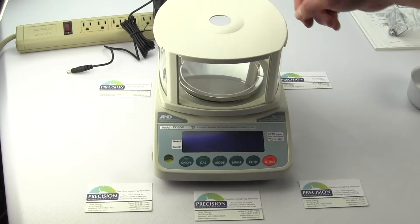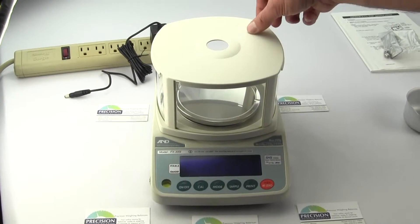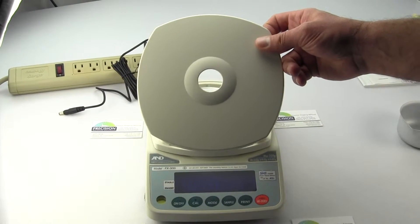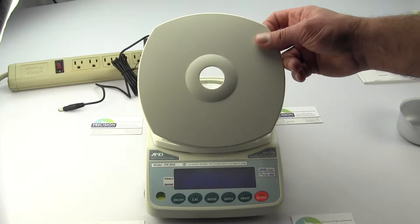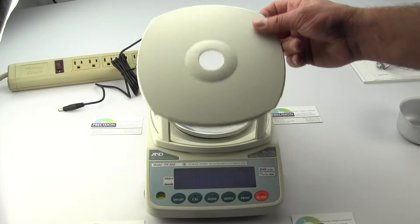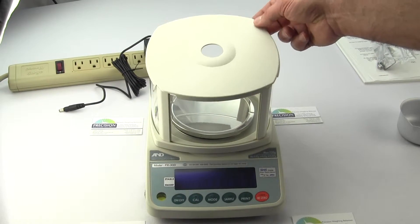This is a plastic draft shield with a cover on the top, so you'll notice on the top there's a hole so you could actually take a pipette or burette and drop fluid onto the balance if you had a dish in there.